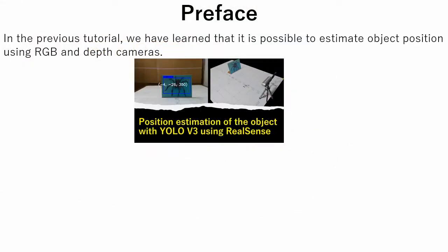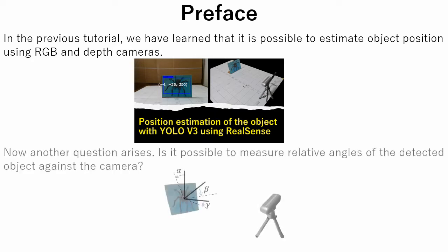In the previous tutorial, we learned that it is possible to estimate object position using RGB and depth cameras. Now another question arises: is it possible to measure relative angles of the detected object against the camera?